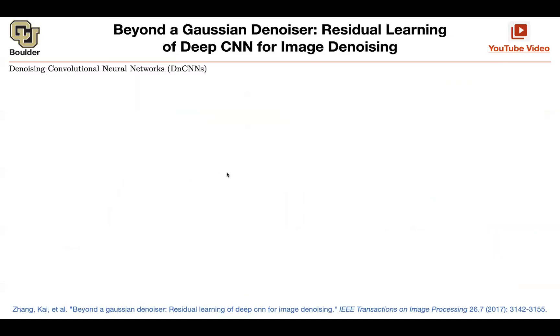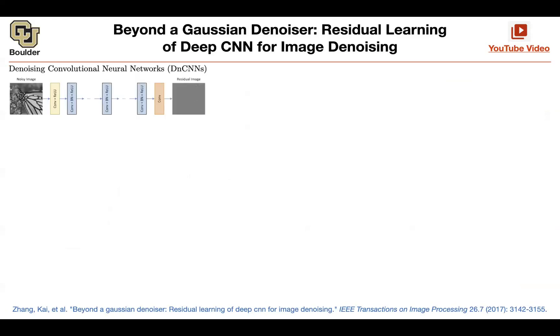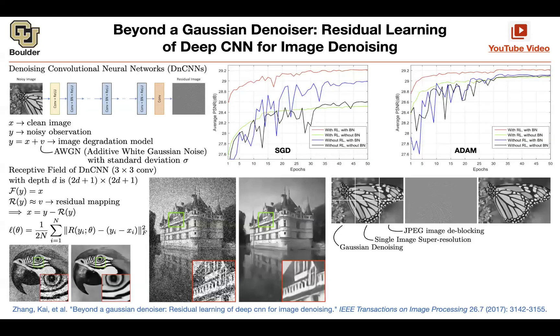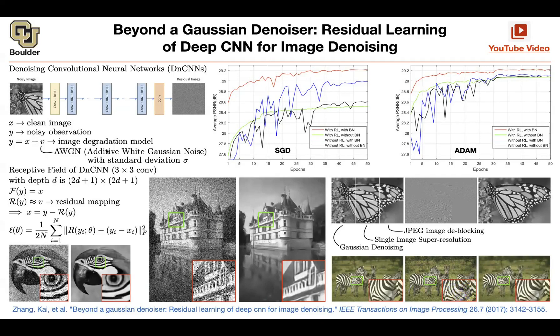Denoisers and super resolution can be put in the same category — you can solve them using the same framework. In terms of the big picture, the previous state of the art before deep learning designed algorithms based on the assumption that you need to have additive white Gaussian noise in order to denoise it.